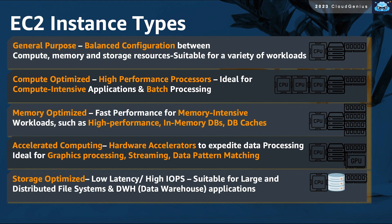The fourth type is known as the accelerated computing family. This type of instance gives you access to hardware accelerators or GPUs — graphical processor units — to allow for expedited data processing. This is beneficial for workloads like graphics processing, gaming servers, and streaming applications.